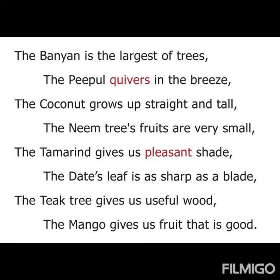The banyan is the largest of trees. The peepal quivers in the breeze. The coconut grows up straight and tall. The neem tree's fruits are very small. The tamarind gives us pleasant shade. The date's leaf is as sharp as a blade. The teak tree gives us useful wood. The mango gives us fruit that is good.